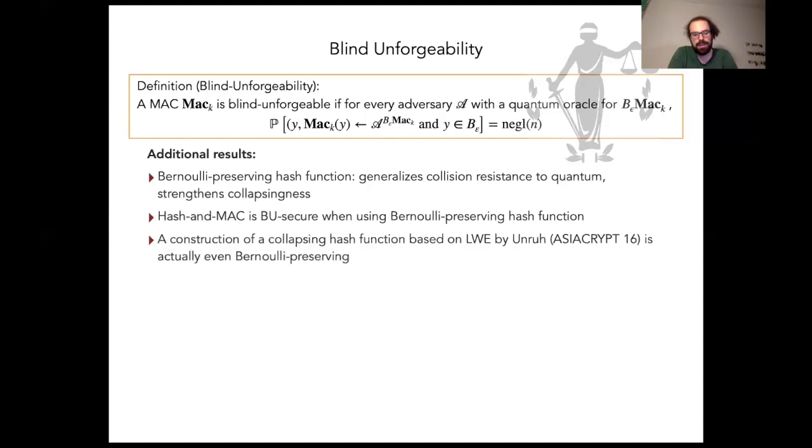We can also show that a construction of a collapsing hash function by Unruh that's based on the LWE assumption is actually even Bernoulli preserving. In addition, we can show that Lamport signatures are one-time blind unforgeable if they are instantiated with a random oracle.